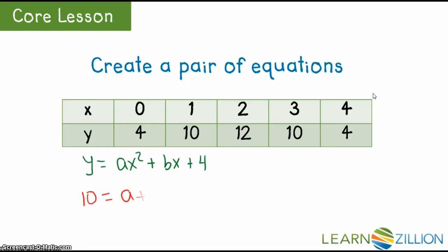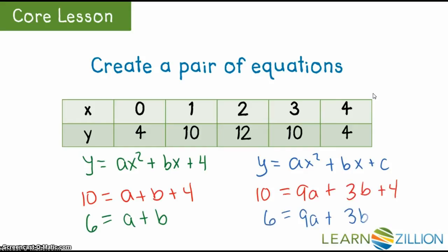Since you need to find two unknowns, set up a linear pair of equations using two pairs of points. The points you choose do not matter. In the left-hand equation, I have chosen to substitute 1 for x and 10 for y. And in the right-hand equation, I have substituted 3 for x and 10 for y and simplified.